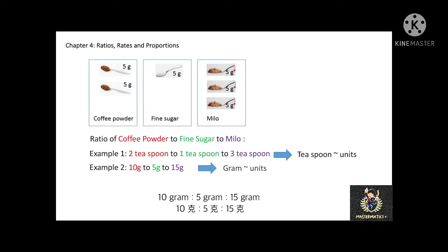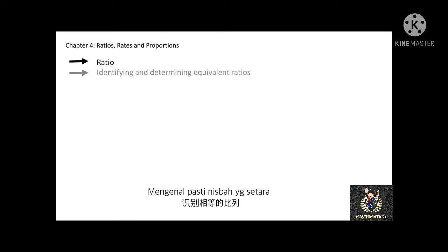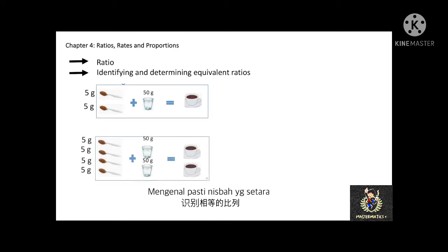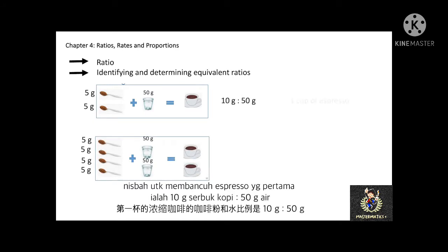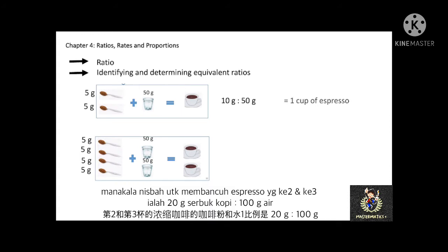Now we can learn to identify and determine equivalent ratios. I will use three cups of coffee as an example. The first cup is made from 2 teaspoons of coffee powder — 10 grams — and 50 grams of water. The ratio of coffee powder to water is 10 grams to 50 grams. The other two cups use 4 teaspoons — 20 grams — and 100 grams of water, giving a ratio of 20 grams to 100 grams.